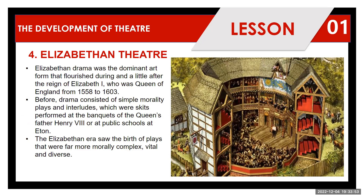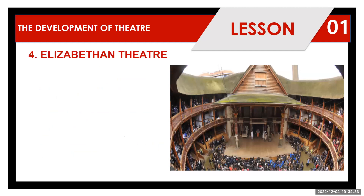Elizabethan drama was the dominant art form that flourished during and a little after the reign of Elizabeth I, who was Queen of England from 1558 to 1603. Before this era, drama consisted of simple morality plays and interludes — skits performed at the banquets of the Queen's father, Henry VIII, or at public schools like Eton. The Elizabethan era saw the birth of plays that were far more morally complex, hence more vital and more diverse.